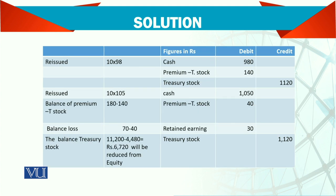Then the reissue price is Rs. 98. The cost of 10 shares was Rs. 112 each, totalling Rs. 1,120. But Cash debit is only Rs. 980. The difference must be debited. Because there is a Share Premium account available, it will be reduced — minus — from the Share Premium account.